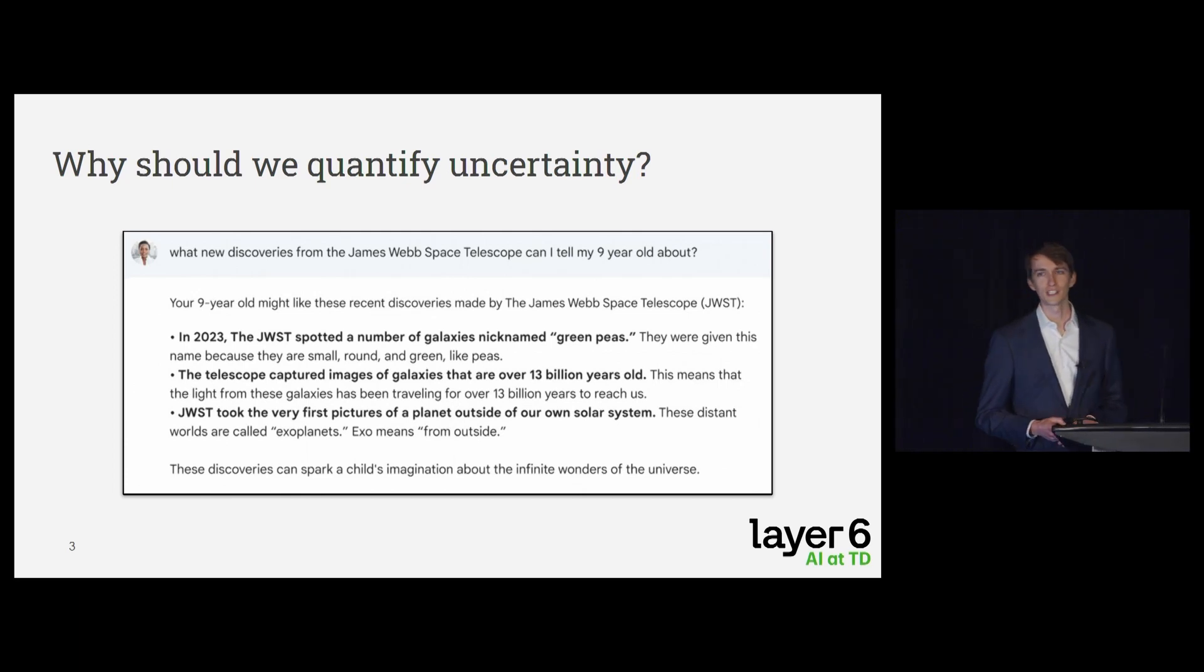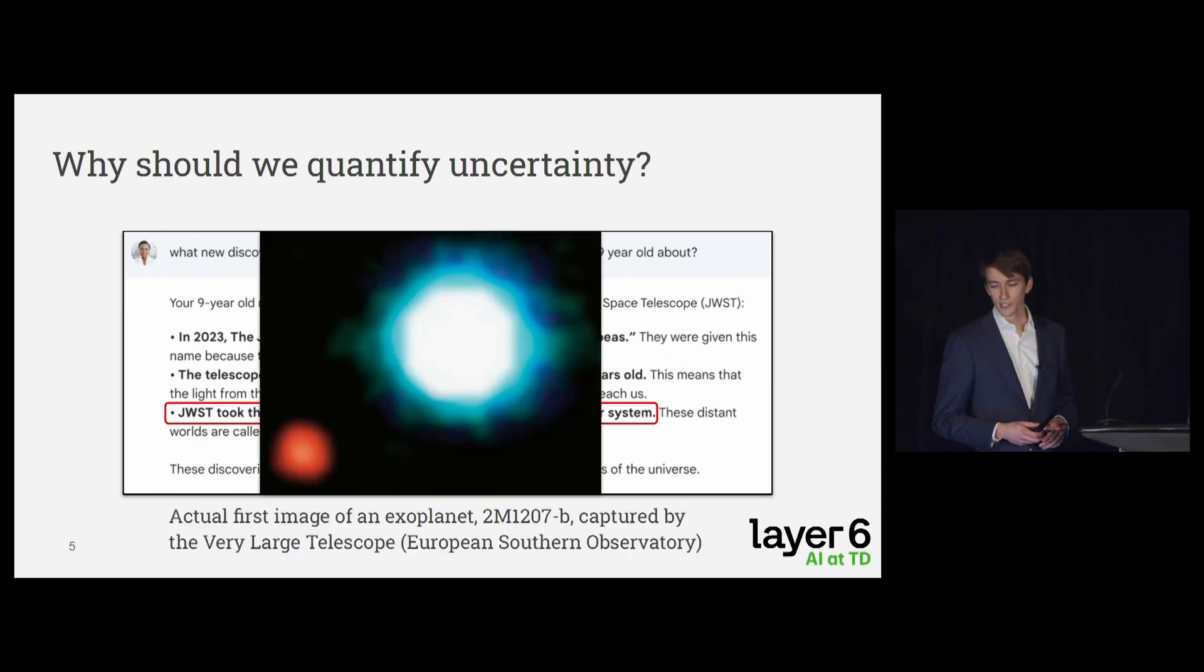So as motivation for why we should quantify uncertainty, here's an example from Google's press release where they were announcing Bard, and I'm sure you've seen it before. Someone had prompted the model by asking for some interesting facts about the James Webb Space Telescope, and Bard dutifully replied with three very neat ideas. Except the person prompting this didn't realize Bard wanted to play two truths and a lie, because one thing here is completely false, just absolutely made up and not true at all. If you're interested, it's the last one. It wasn't the James Webb Telescope that discovered the first exoplanet or took their picture, it was the very large telescope.